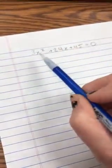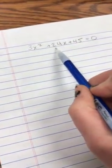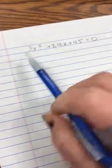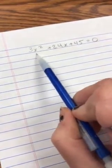Okay, so another example. This is from your review worksheet: 3x squared plus 24x plus 45. First thing I'm going to do is see if I can factor out a greatest common factor.